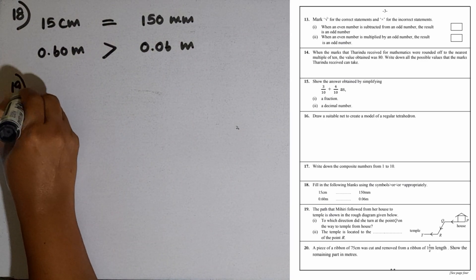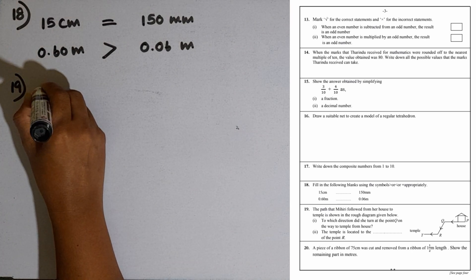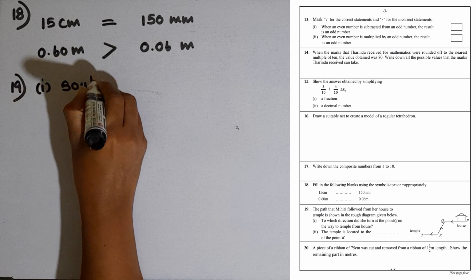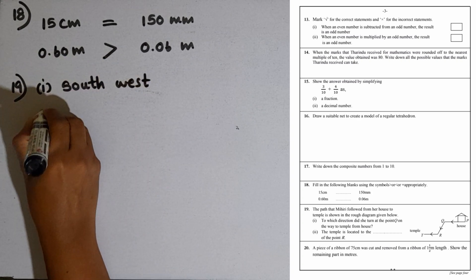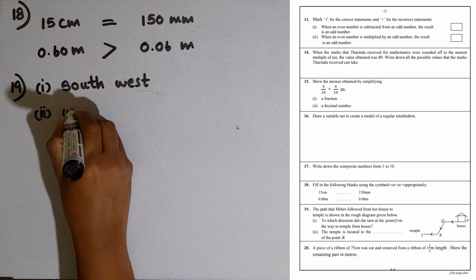Question number 19: The path that Mihiri followed from her house to temple is shown in the rough diagram. First question: To which direction did she turn at point Q on the way to temple from house? From Q, she turned to south-west direction. Second question: The temple is located to the west of point R.